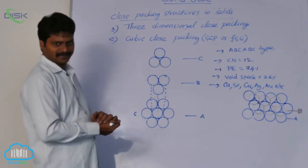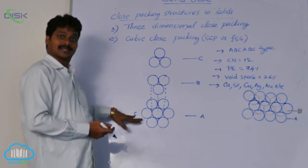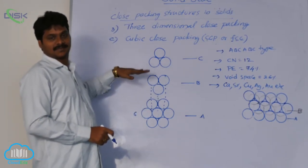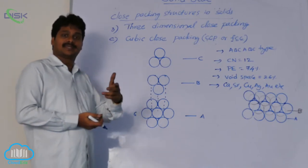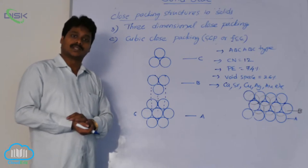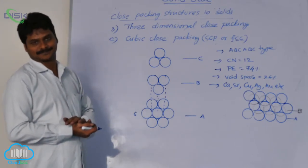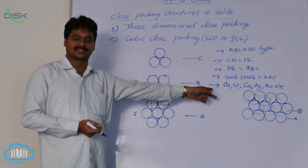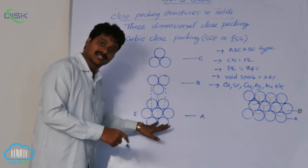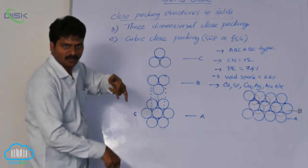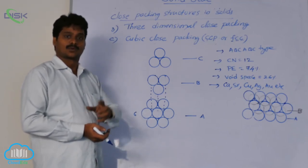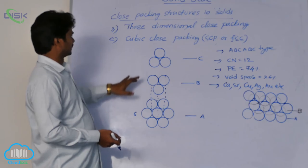The important points about CCP geometry: the first layer and fourth layer spheres align with each other, and it has an A, B, C, A, B, C type layer structure. In both HCP and CCP, the first and second layer arrangements are the same; they differ only in the third layer arrangement. In both, packing efficiency is 74% and coordination number is 12 — with 6 from the same layer, 3 from above, and 3 from below — whereas in simple cubic the coordination number is only 6.